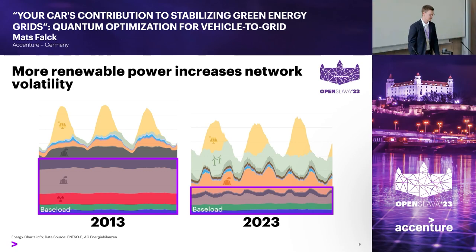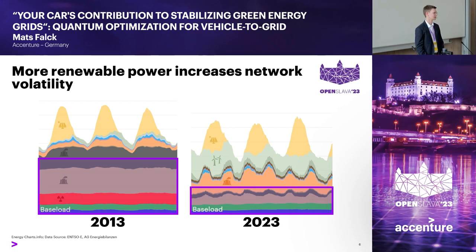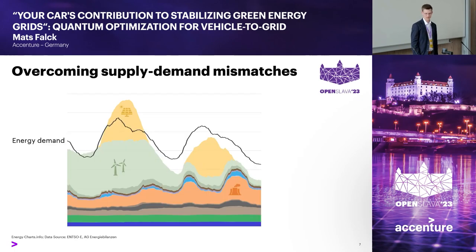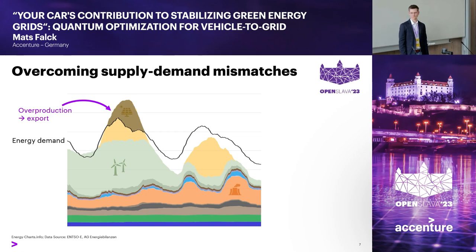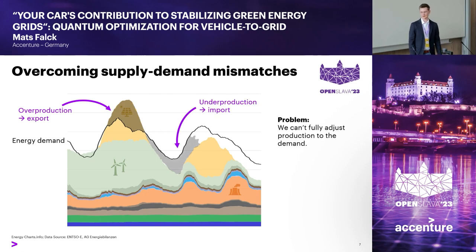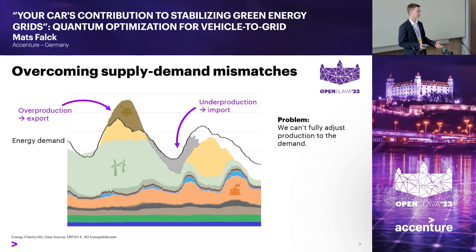We can't really predict in advance how much energy we'll produce, since we can't tell how the wind will blow or the sun will shine weeks ahead. We have to see how much energy we generate pretty much one day ahead of use. This creates so-called supply-demand mismatches: during high production there may be overproduction where we export energy, and other times we produce less and have to import expensive energy.